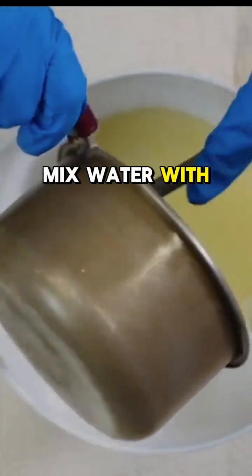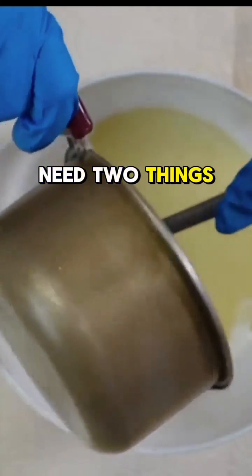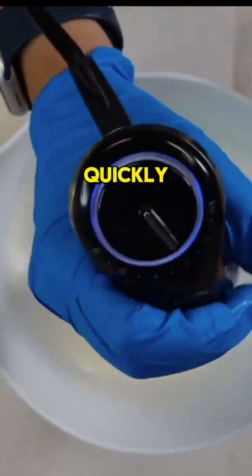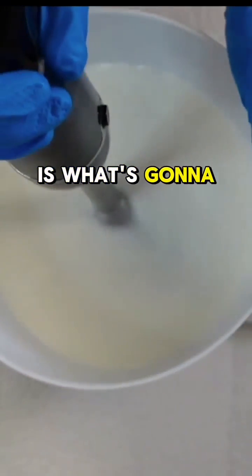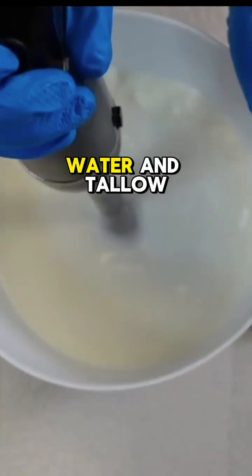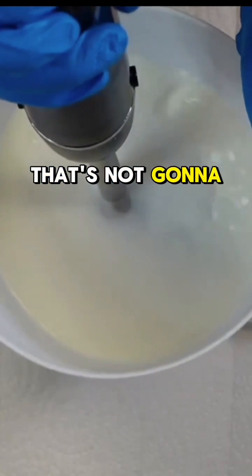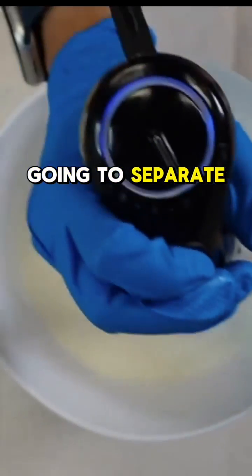Now, when you mix water with tallow, you're going to need two things: an emulsifier and a preservative, because that water is going to grow bacteria very quickly. And the emulsifier is what's going to bring that magnesium, water, and tallow together. It's going to make a stable product that's not going to get moldy or rancid, and it's not going to separate.